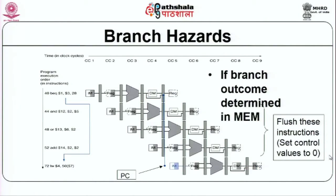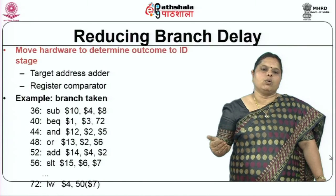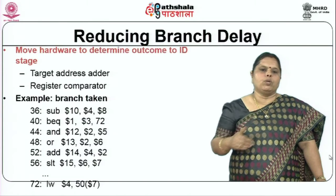Looking at branch hazards: if the branch outcome is resolved in the memory stage — the fourth clock cycle — where you find out the condition and identify the branch target address, then all instructions fetched until that point will have to be flushed. That is the problem with branch hazards.